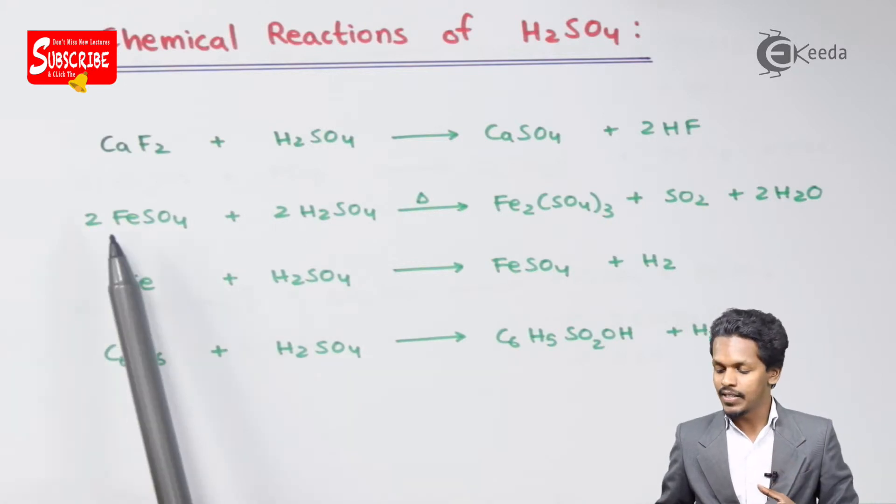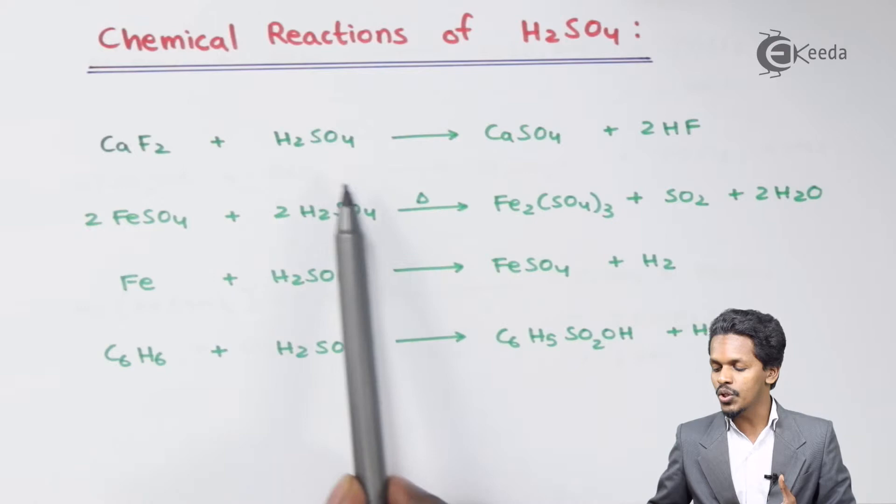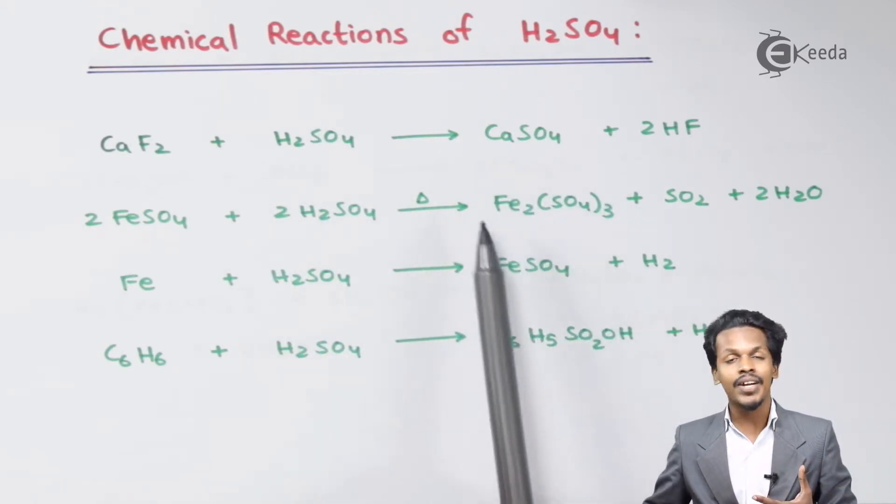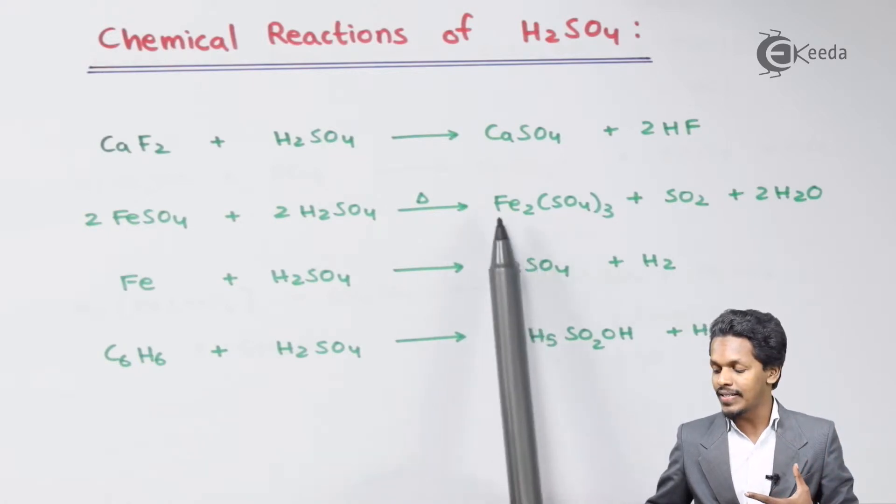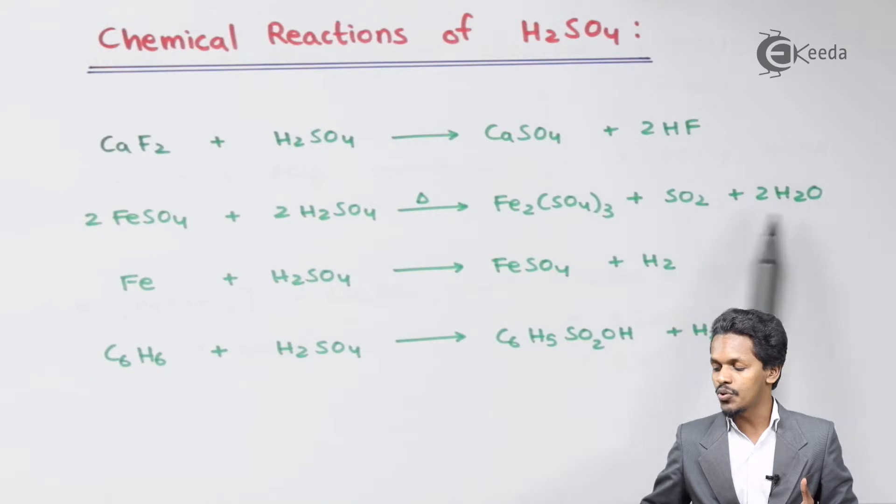Talking about the next one: suppose if 2 moles of FeSO4, that is ferrous sulfate, is treated with 2 moles of H2SO4 and we provide heat, this would be converted into ferric sulfate, Fe2(SO4)3, with the evolution of SO2 as a gas and 2 moles of H2O.